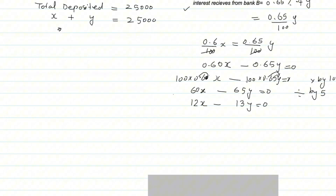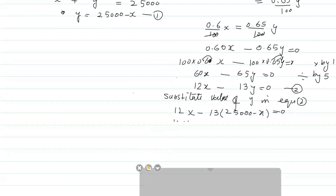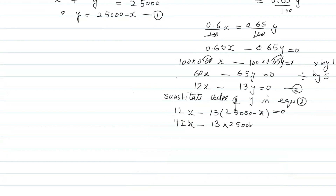Making y the subject from equation one: y = 25,000 − x. Taking this as equation one and the simplified interest equation as equation two, substituting the value of y into equation two: 12x − 13(25,000 − x) = 0, which gives 12x − 325,000 + 13x = 0, so 25x − 13 × 25,000 = 0.